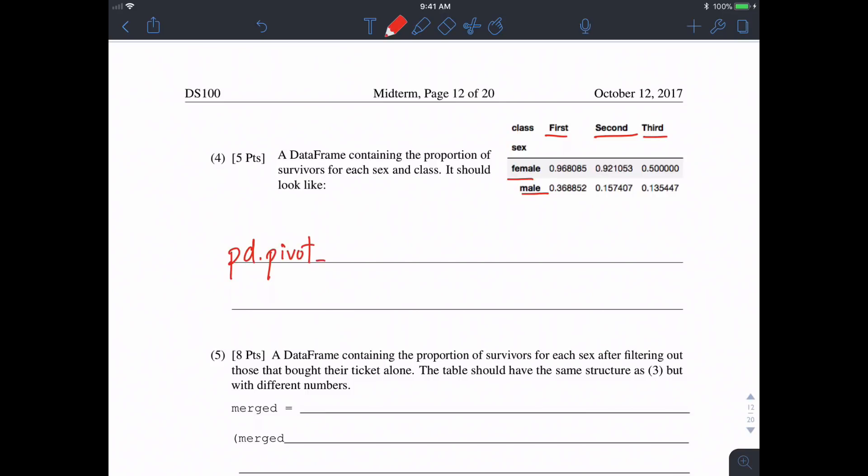So PD dot pivot underscore table. Our first parameter is the table itself, so that's TI. Our second parameter values will be what makes up the individual entries in the table, which in this case is survived, because we will be taking the mean of all of these. Then we need to supply what the index is, i.e. what the rows will be, we only have two rows, and they represent the sexes, male and female. And lastly, we want columns, so what first, second, and third are? Well, those are the class. And I believe the default aggregation function is the mean, so we don't need to specify that. So that wraps up part four.